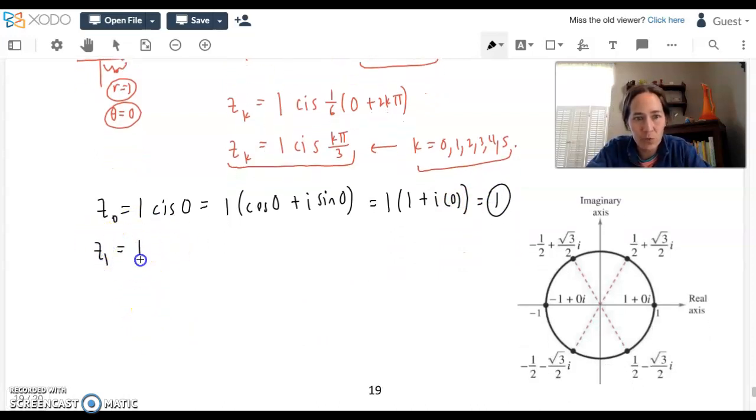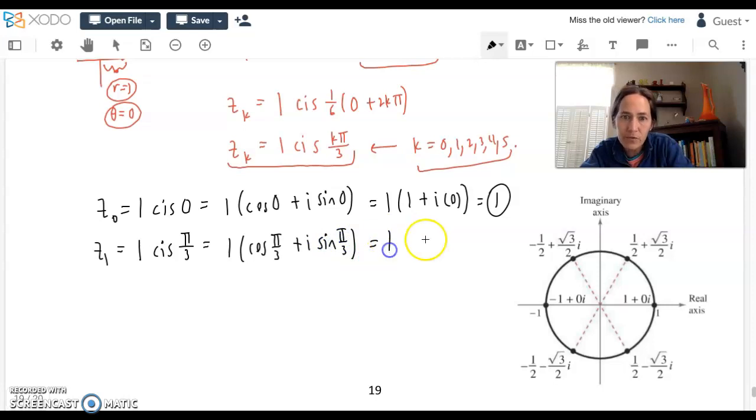Start with zero. So z sub zero equals, what are we going to get in polar form? 1 cosine plus i sine of zero. This is like saying 1 cosine of zero plus i times the sine of zero. Here's an example of a question where we do not need to reach for a calculator. We know that the cosine of zero is just going to be one and the sine of zero is zero. So the first answer is going to be the number one.